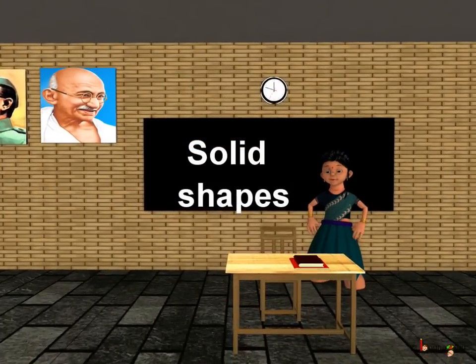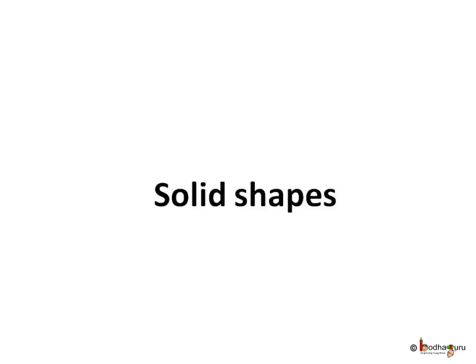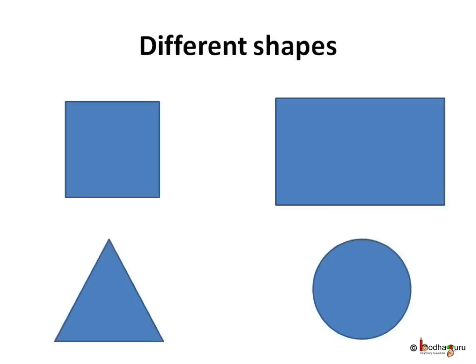Good morning children. Today we shall learn about different shapes. You know different shapes like a square, a rectangle, a triangle, or a circle. Now let us see some solid shapes.